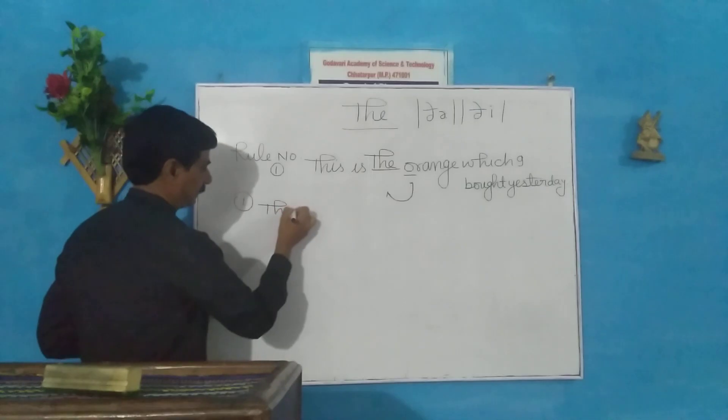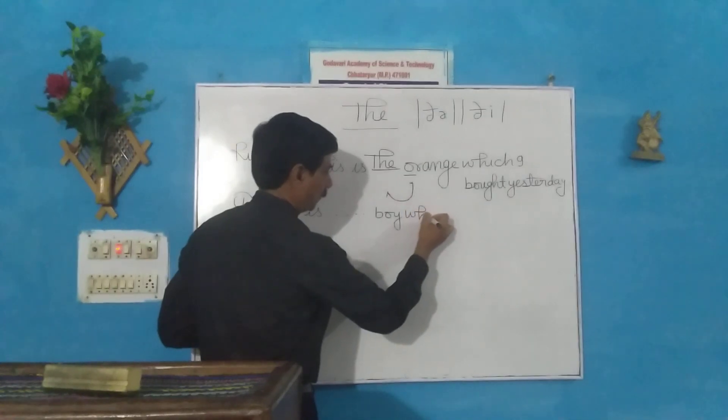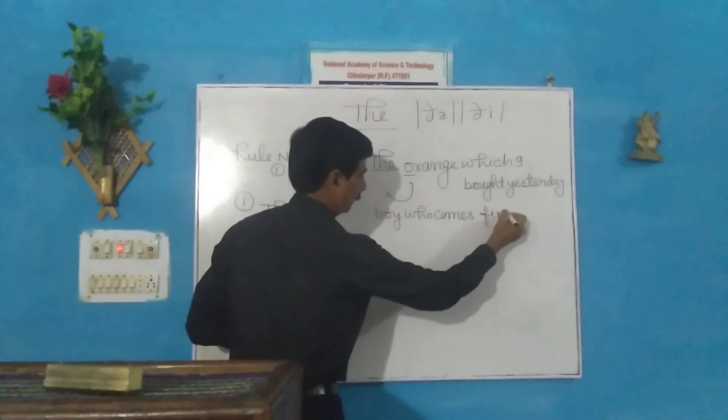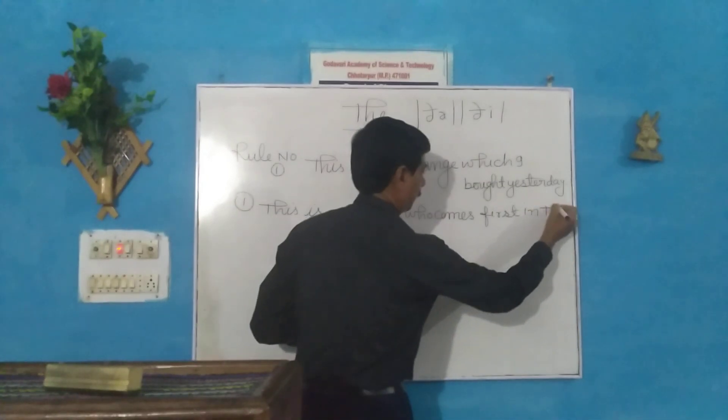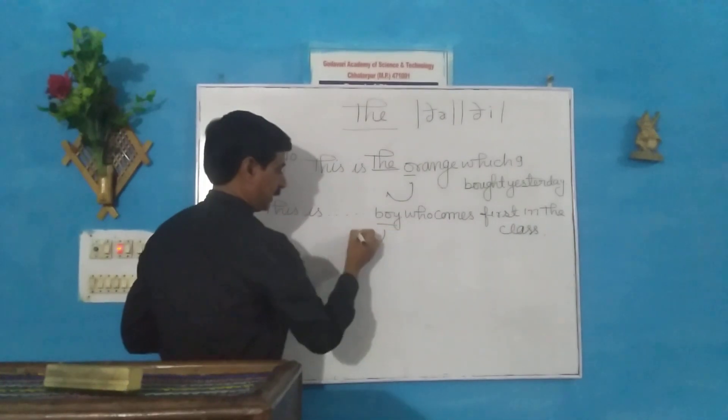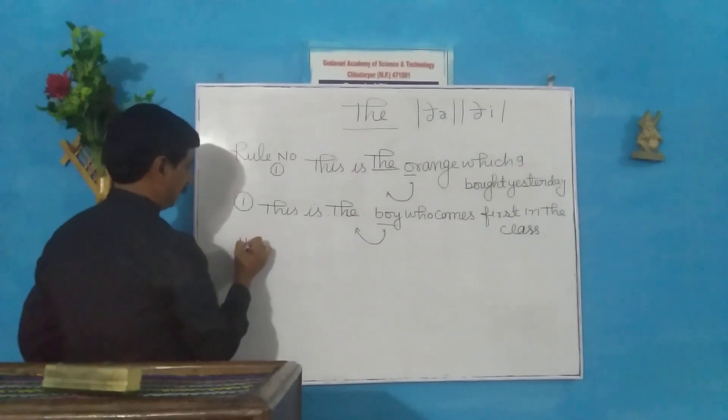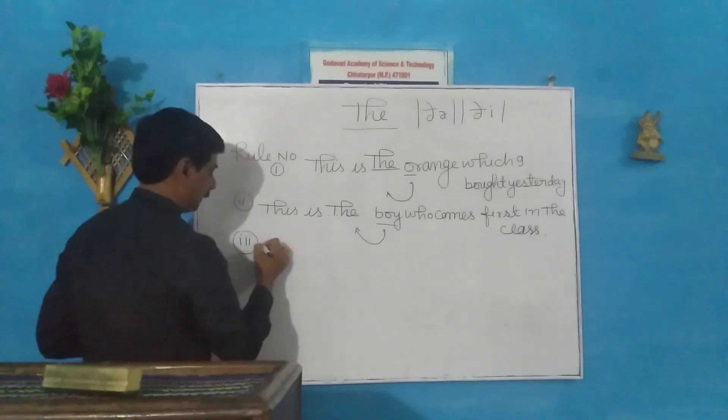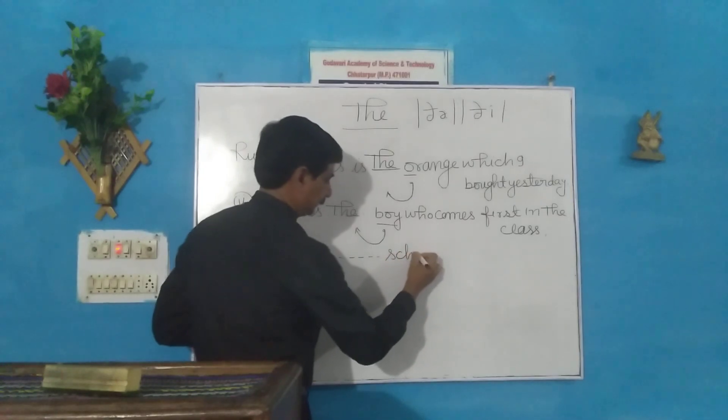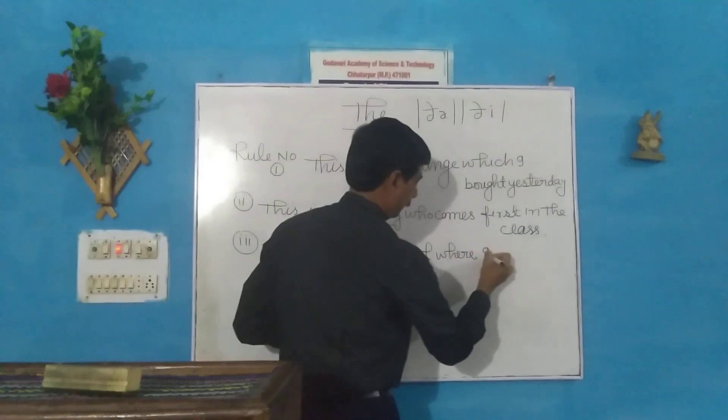This is why she comes first in the class. Here, particular one, a specific person, that's why the will come. Third one: This is the school where I studied.